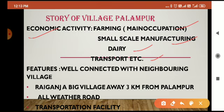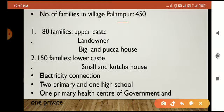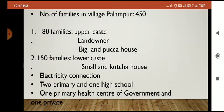Besides that, what other features does Palampur have? Palampur is a well-connected village with neighbouring villages. Rai Ganj is a big village about 3 km from Palampur. All-weather roads and transportation facilities are available. In Palampur, 450 families live — 80 families belong to the upper caste and are land owners with big, clean houses, while 150 families belong to the lower caste with small, clean houses. Electricity connections are there, two primary schools and one high school, and one government and one private primary health center.